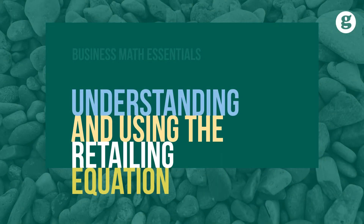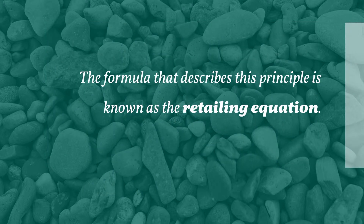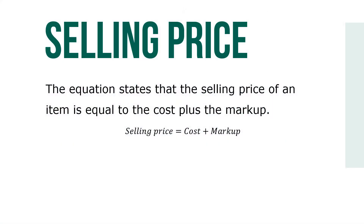The fundamental principle on which business operates is to sell goods and services for a price high enough to cover all expenses and provide the owners with a reasonable profit. The formula that describes this principle is known as the retailing equation. The equation states that the selling price of an item is equal to the cost plus the markup.